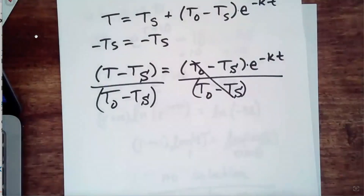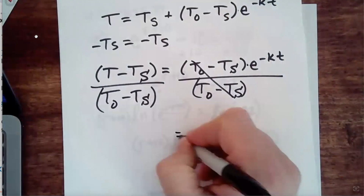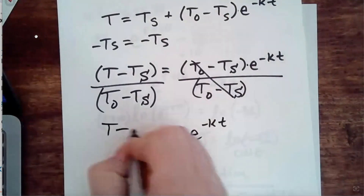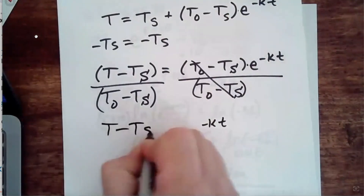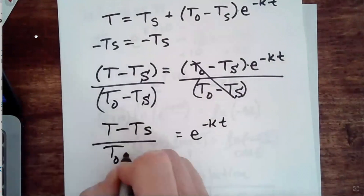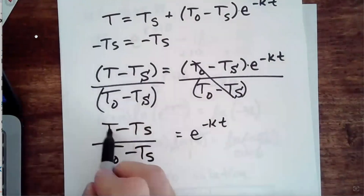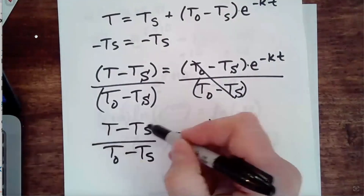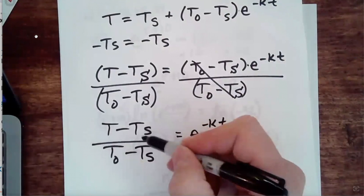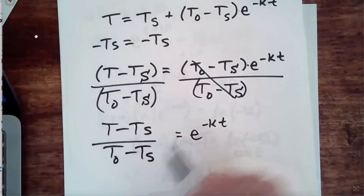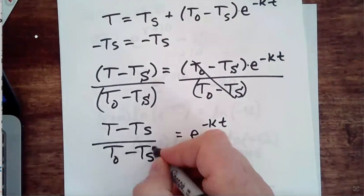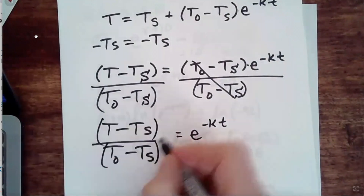So a rewrite leaves us with E to the negative KT equals T minus T sub S over T sub zero minus T sub S. This is our temperature — as things cool down, the temperature changes of that object. T sub S is the surrounding environment, whatever it is on your thermostat on the wall. The initial amount — we're talking like T is 180 degrees Fahrenheit.